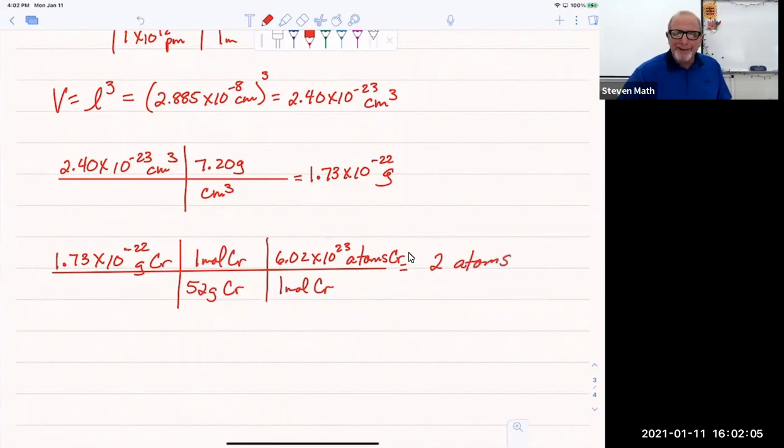Look at that. Two atoms. How sweet. So that tells us we've got a body-centered cubic arrangement for chromium.